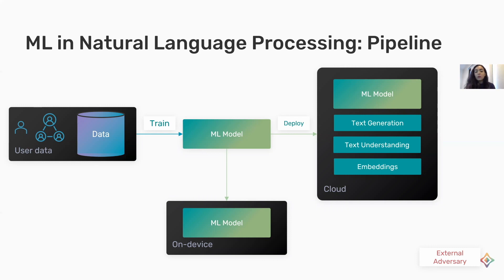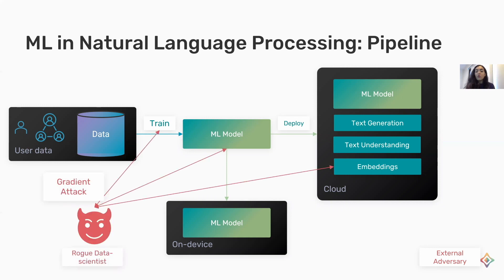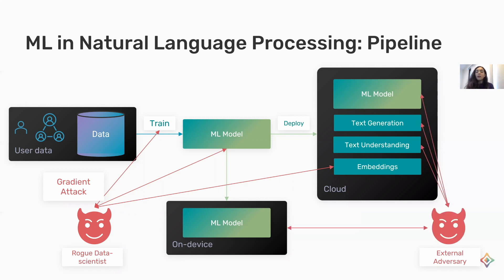Now, what are the possible vulnerabilities and threats in this model? One is if we assume we have a rogue data scientist who has access to the training process. In this case, the data scientist could mount a gradient attack and try to infer personal information from the updates to the model, or they could attack the trained model or the embeddings and try to extract information from them. Another threat is an external adversary who could query the model to extract private information about the data contributors.